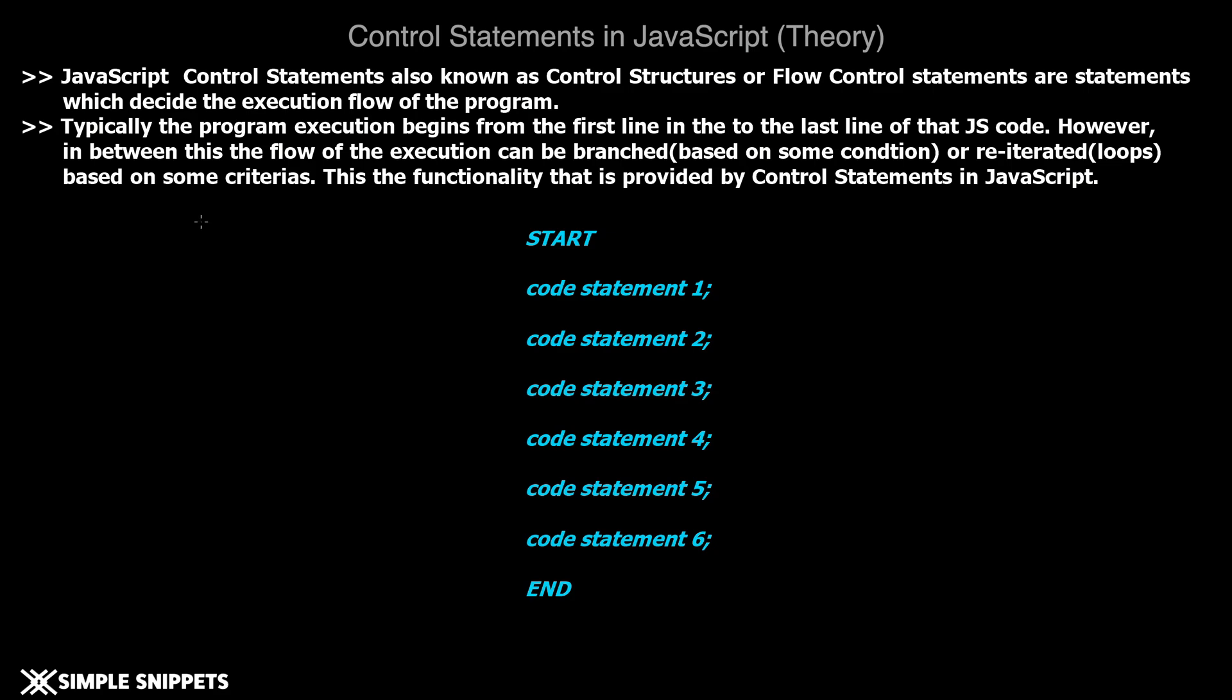So a little bit of theory on JavaScript control statements. These control statements basically govern the execution flow of the program. So what do I mean by this? As you can see on the screen in the blue code, typically this is what happens. Let's say we have the JavaScript code inside our script tag.